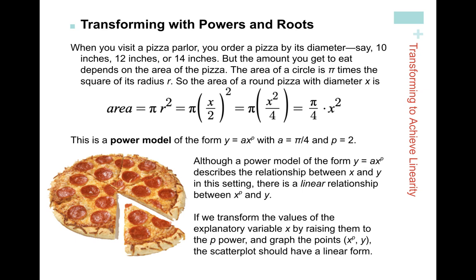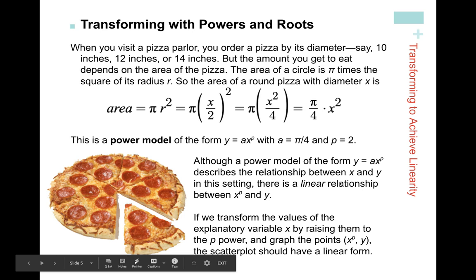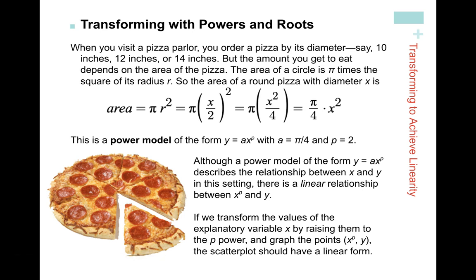Although a power model y = axᵖ describes the relationship between x and y, there is actually a linear relationship between xᵖ and y. Your input is not just x — it's x raised to the p power — and your output is y. So if we transform the explanatory variable by raising it to the p power and graph the points (xᵖ, y) instead of (x, y), the scatter plot will have a linear form rather than a curved, nonlinear form.